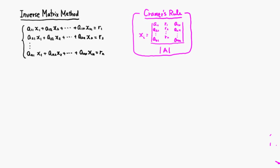Let's look at the inverse matrix method. Let's say we're working on a system of linear equations in this general form — n by n. I'm going to write this into matrix form.